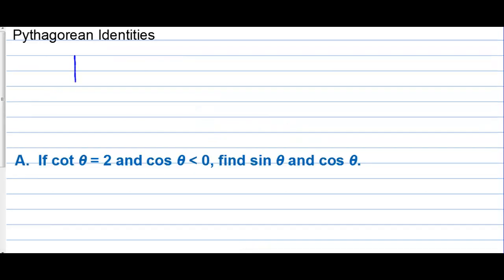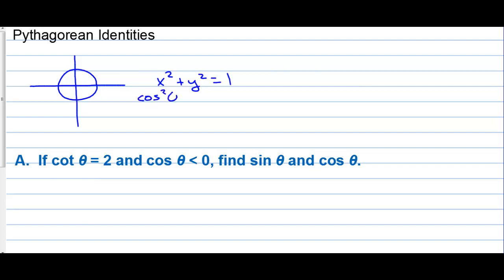Pythagorean identities. Let's start out with the unit circle, which is a circle with a radius of one. So x squared plus y squared is equal to one — that's the equation of a circle with a radius of one. x is the cosine of an angle, so we have cosine squared theta; y is the same as the sine of an angle. So we have cosine squared plus sine squared is equal to one. That's the first Pythagorean identity.